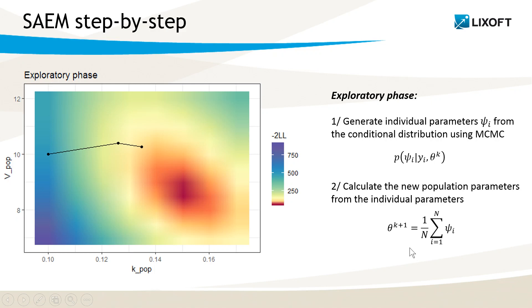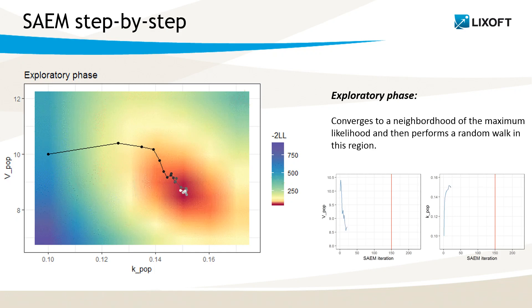I will now show you the full trajectory of the exploratory phase. During this phase, we converge to a neighborhood of the maximum likelihood and we then perform a random walk in this region. This is because at each iteration, the average over the individual parameters is a bit different. So at the end of the exploratory phase, I'm constantly moving around the maximum likelihood.